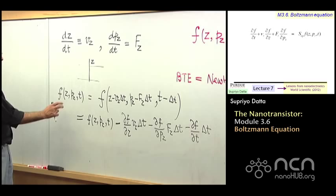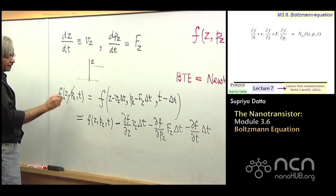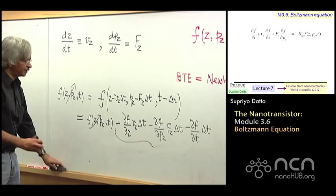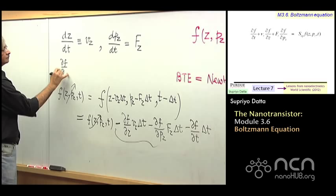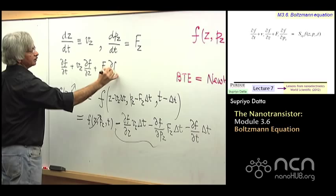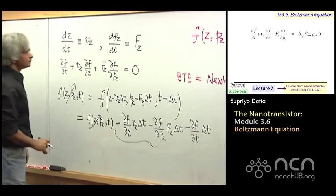So, what this tells you, then, is that this f is equal to this minus that. So what that means is I can cancel the f from both sides. So whatever is here must be equal to 0. So, I could write, I could take this right here then, del f del t plus vz del f del z plus fz del f del pz equals 0.